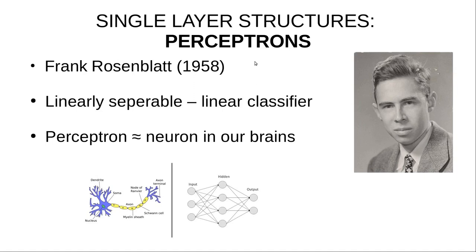Neural networks started conceptually around the 1930s, but the big step was introduced by Rosenblatt — you can see him in the picture — who introduced the perceptron in 1958. What is a perceptron? We can draw a similarity to human brains: we generally use neurons, shown on the left side, and in the mathematical model, if we want to model these neurons, it looks like what you see on the right side. Each neuron in the human mind does only one job, and these circles in the mathematical model also do one job.